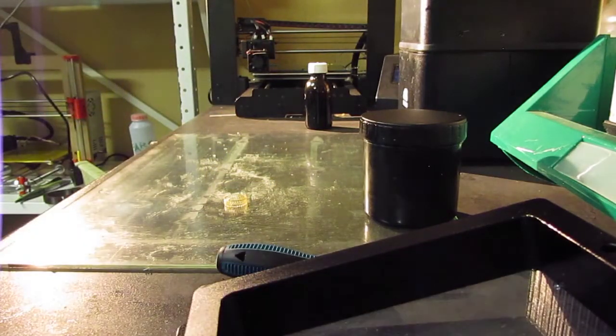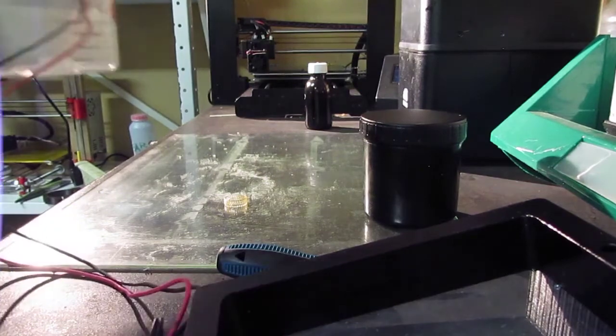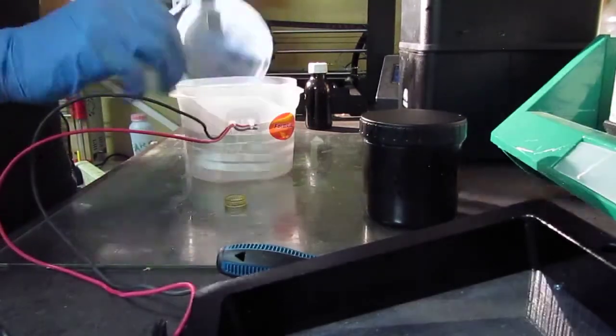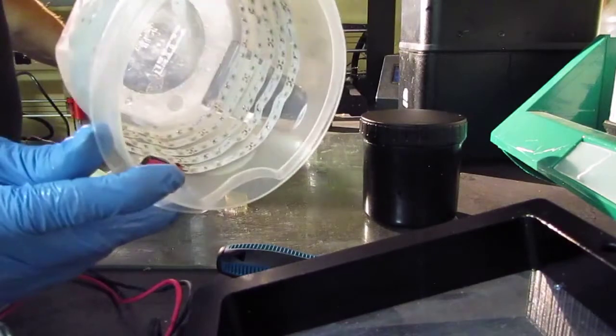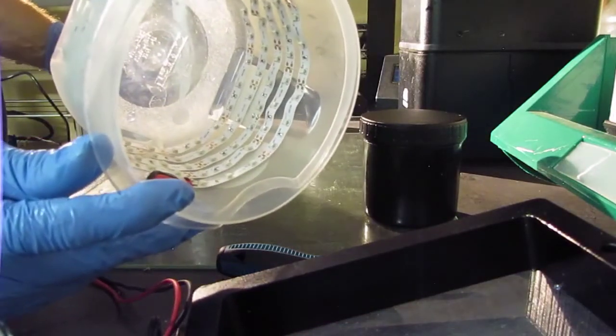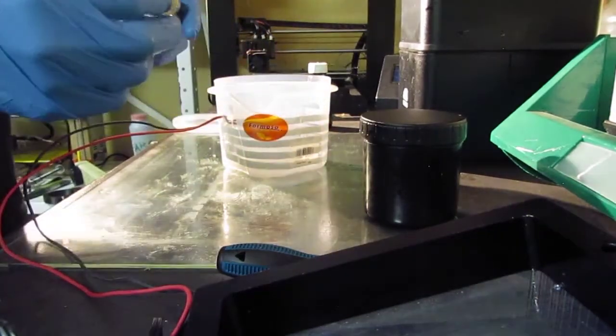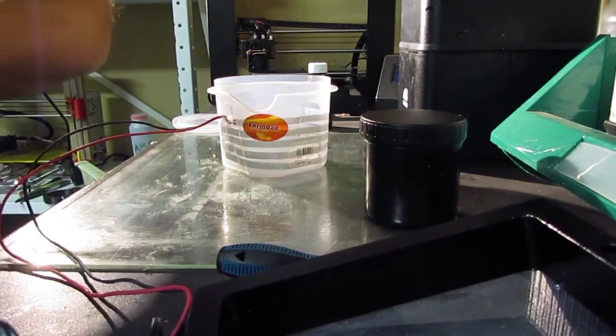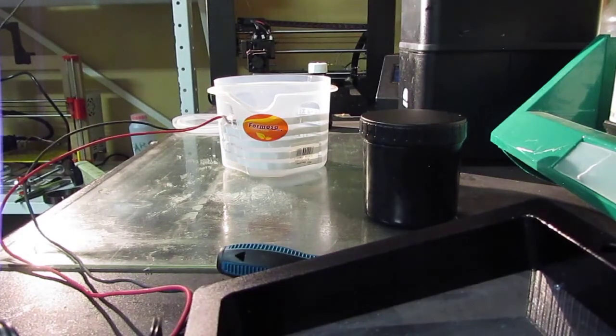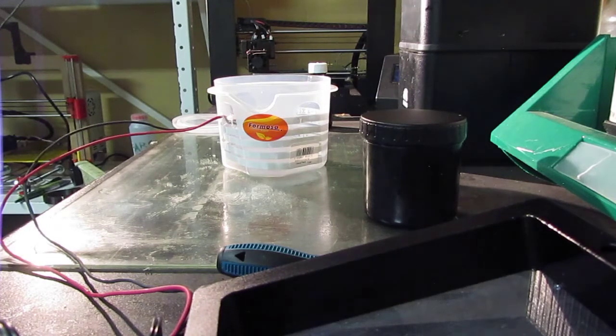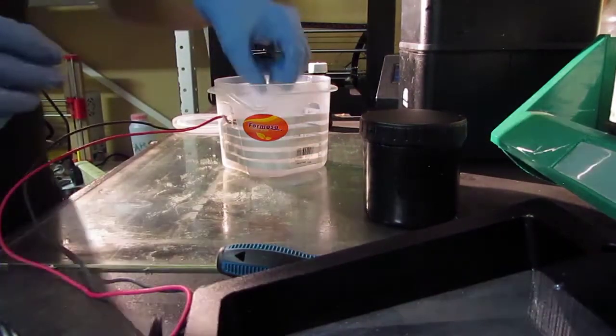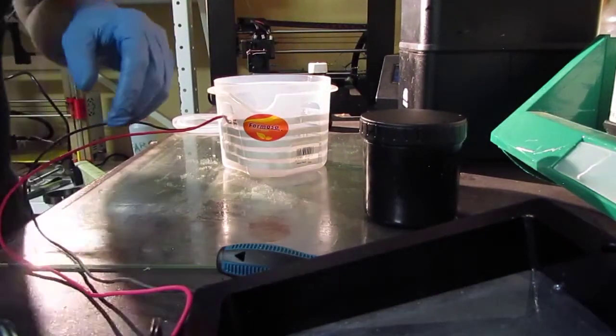Now for a UV light, this, which is essentially got a strip of UV LEDs in there. I'm just going to blow this with some compressed air to clean it. Okay, so that goes in there.